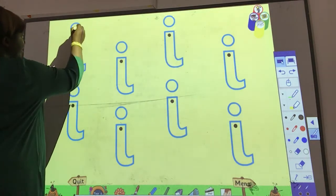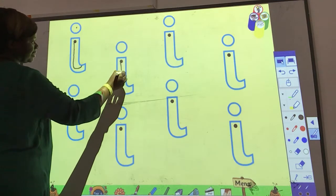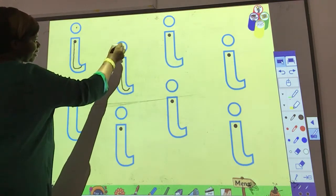So let's go. Standing line, make a small tail and a dot. Standing line, make a small tail and a dot. Standing line, make a small tail and a dot.